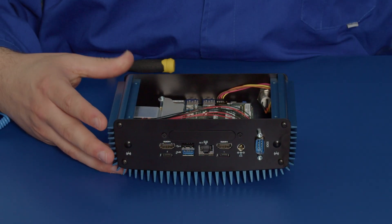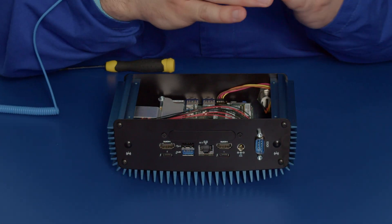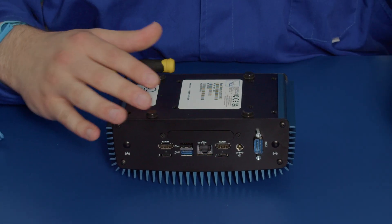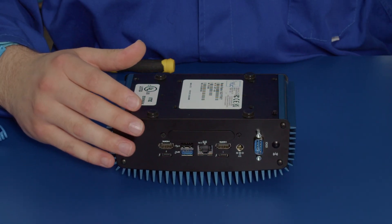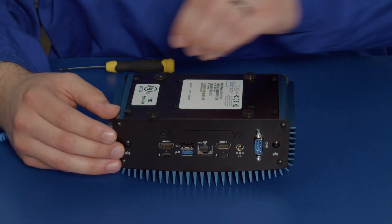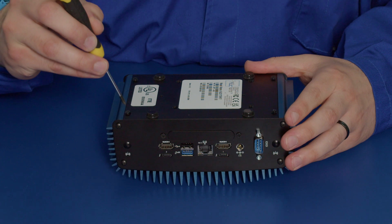So what we need to do now is place our base plate back on in the exact same orientation that we have taken it off. Then we take our four screws, pop them in each of the holes in the corners, and now we just screw them down.